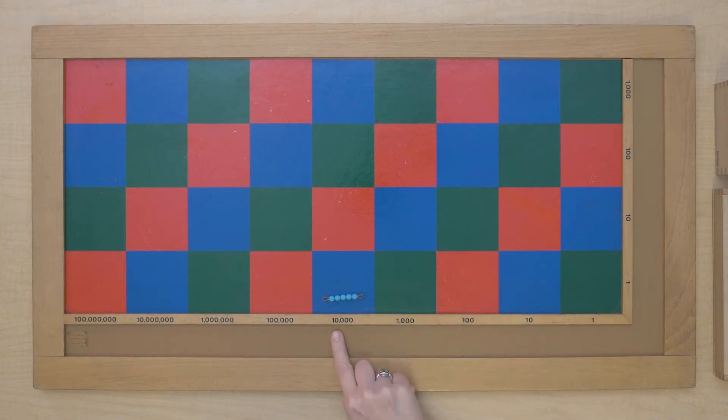Here it would be 50,000. What about here? We'd have five million.